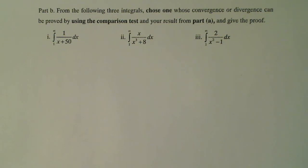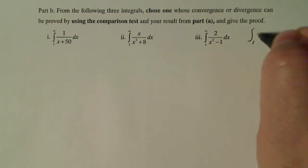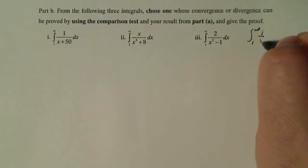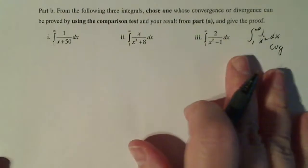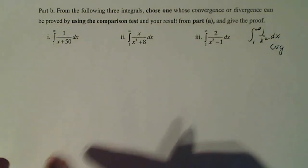This is part B from the other problem. We're going to be using the result from part A to solve this problem here in part B. Part A said that my integral from one to infinity of one over x squared dx converges. That's what part A says. It converges.